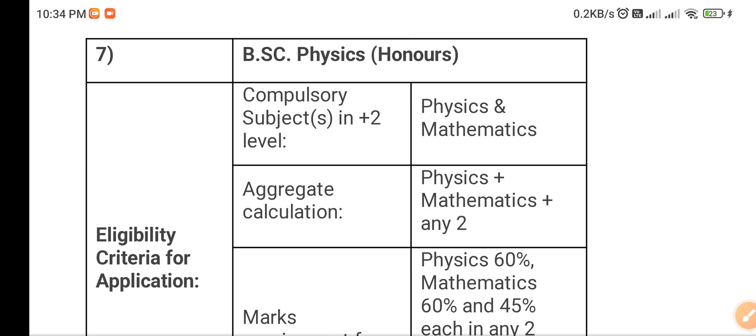Then there is aggregate calculation marks. You have to calculate by Physics marks plus Mathematics marks and then any two subjects you have to mention. Here you don't have to mention your favourite subject but the subject you are getting the highest marks. Like English and other subjects, if you are getting higher marks, then mention that subject.